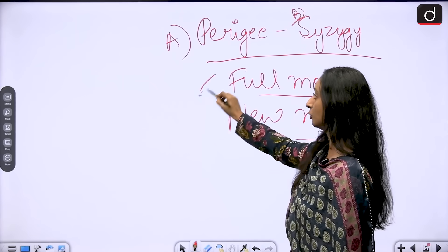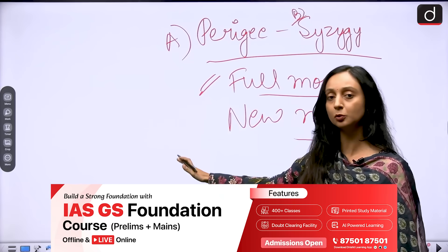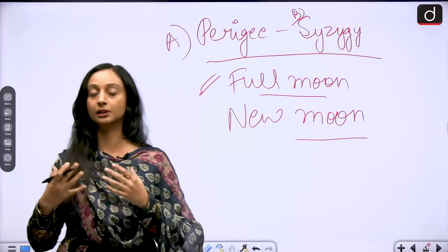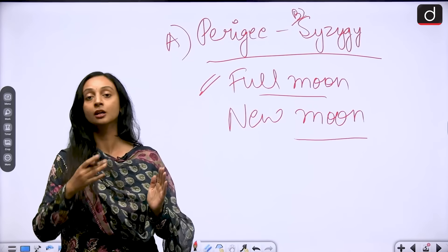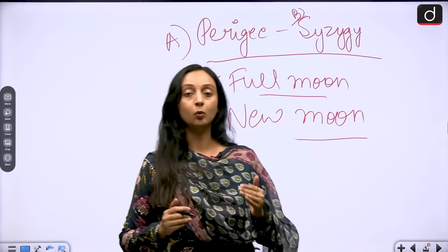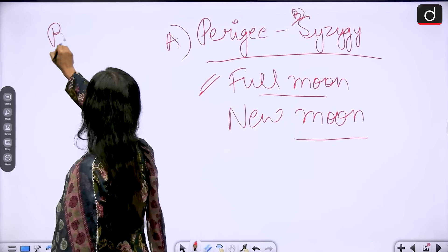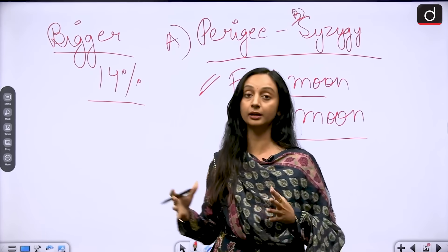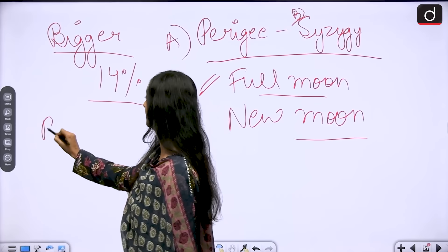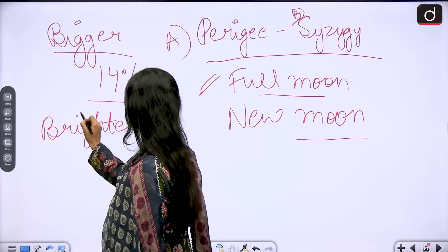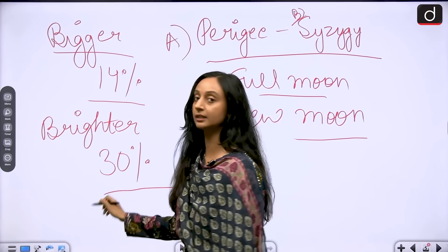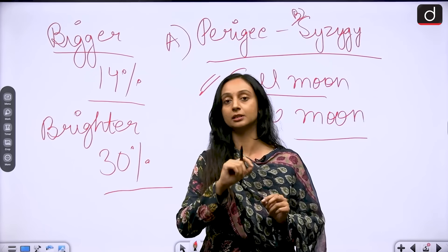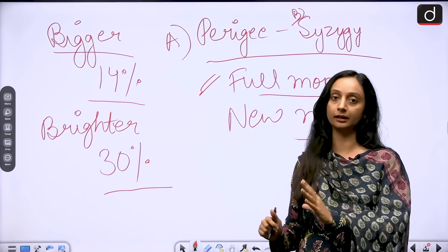A supermoon in the full moon situation gives us a visible supermoon, and in the new moon situation we get an invisible supermoon because it will be completely dark. So a supermoon is a full moon that occurs when the moon is at perigee and the situation is of syzygy — the sun, earth, and moon are in a straight line. What we get is a moon that is 12 to 14 percent bigger in its appearance as well as 25 to 30 percent brighter than its normal appearance.